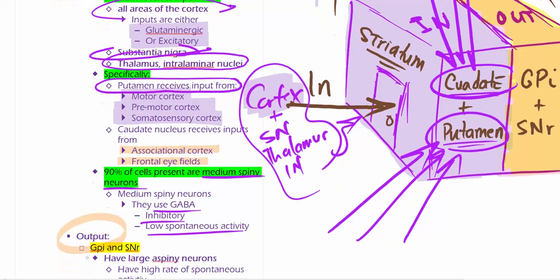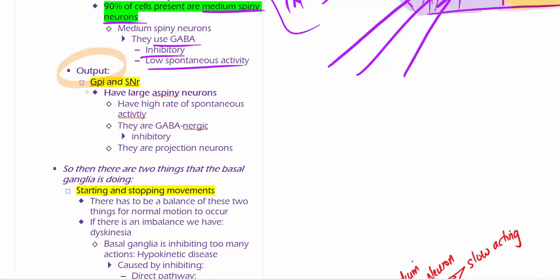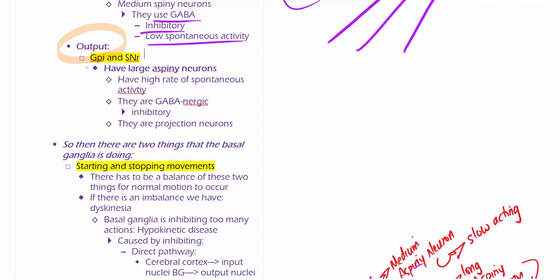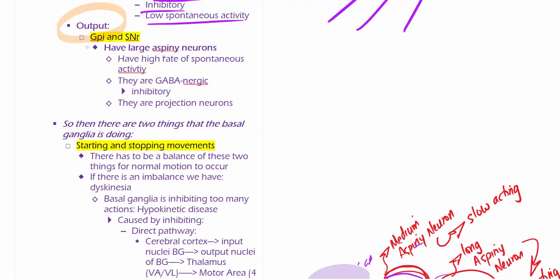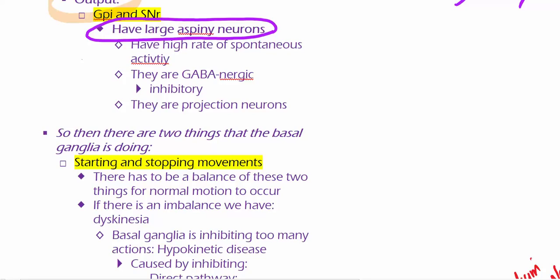So is everyone good on this? So we already talked about the output, globus pallidus interna and substantia nigra reticulata. So these guys are going to have large aspiny neurons. In contrast to the medium spiny neurons, these guys are going to have a high rate of spontaneous activity. They're still going to be GABAergic. They're going to be inhibitory. And they're going to be projecting to other places.